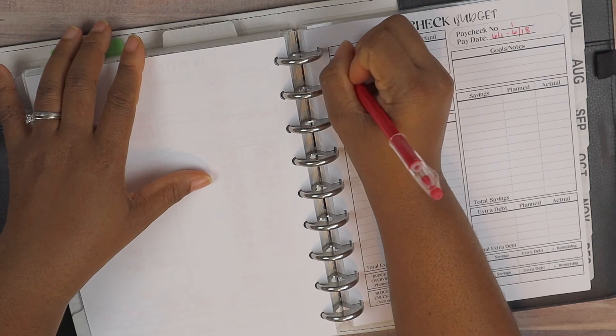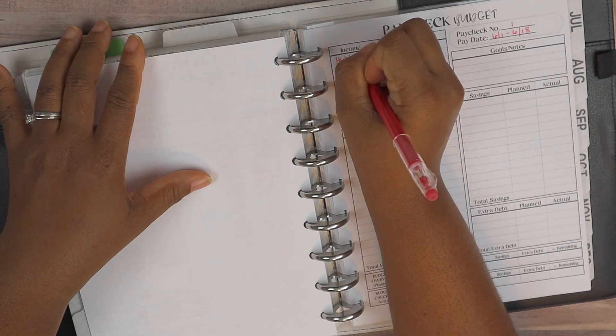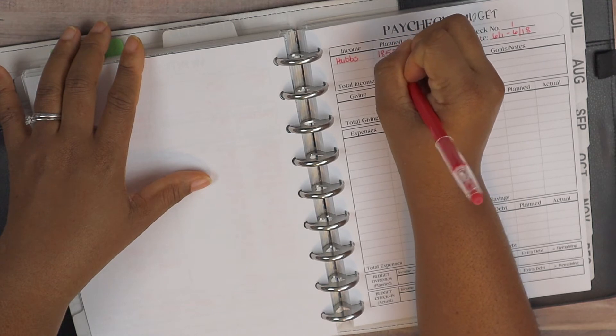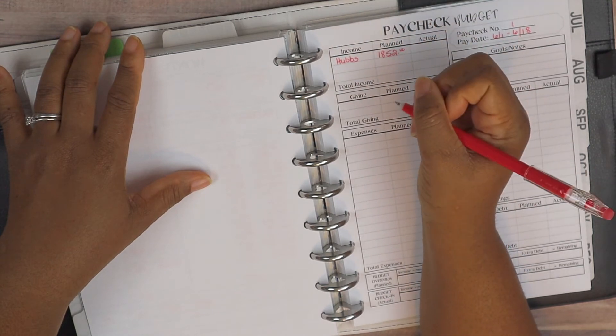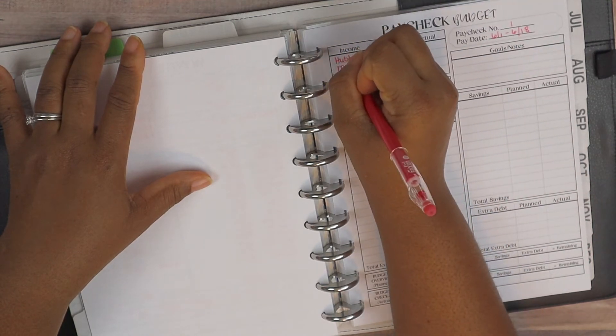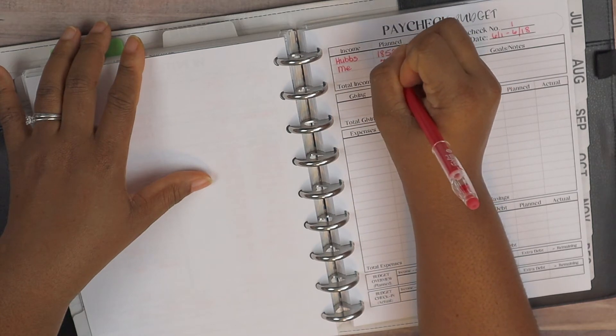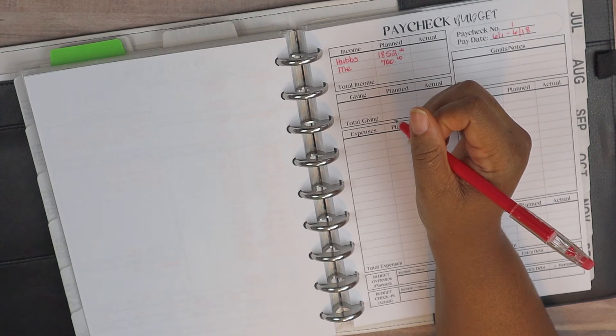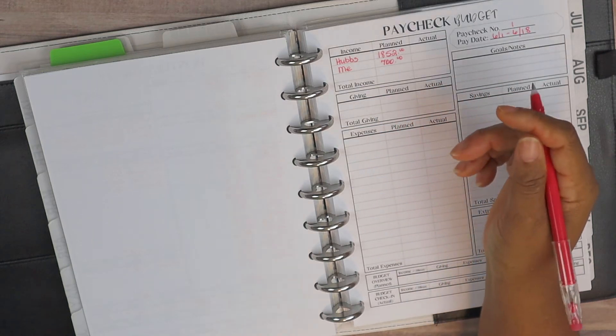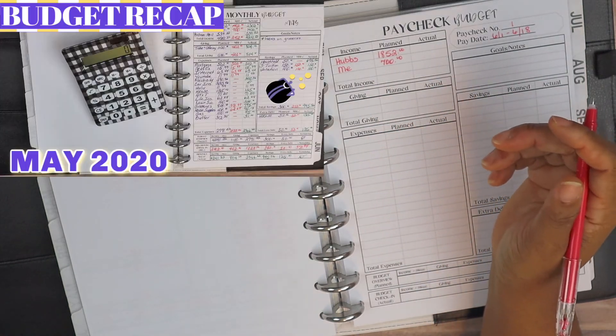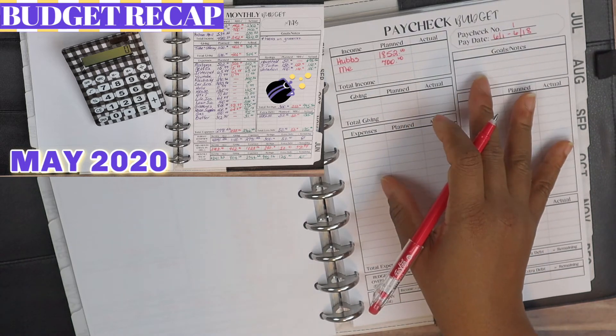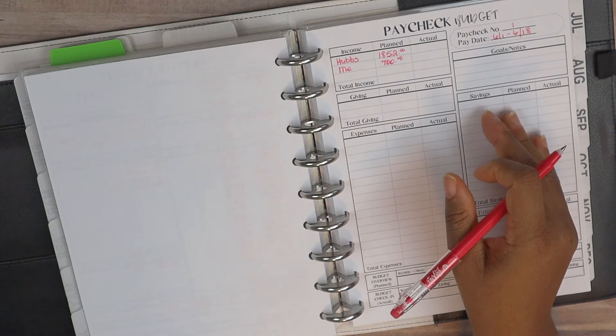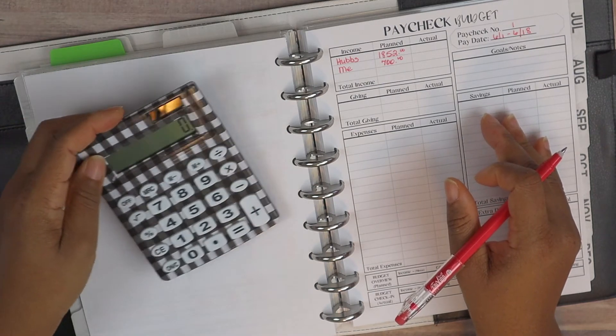Now we are planning for hub's income to be direct deposit is $1,852, that's what we're planning, and then for me we are planning $700 to be deposited. Now we don't have any rollover from the month of May, and I explained what we've done with our rollover in the May budget recap. If you missed that video, I'll link it up above, you can go back and check that out as well.